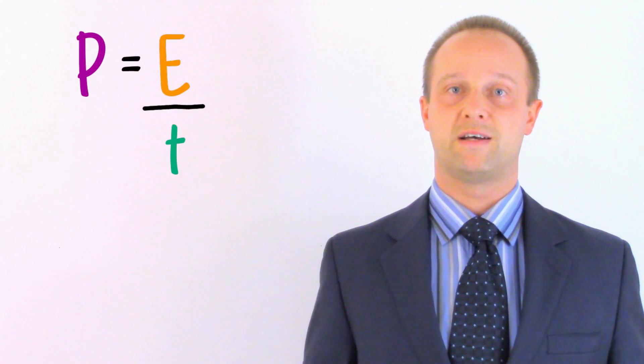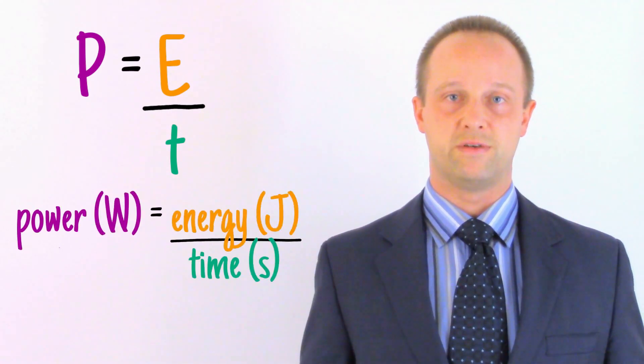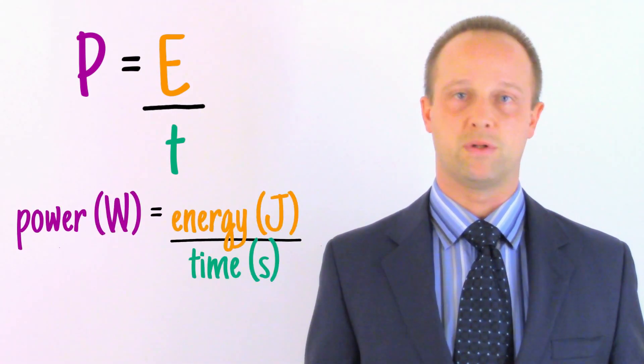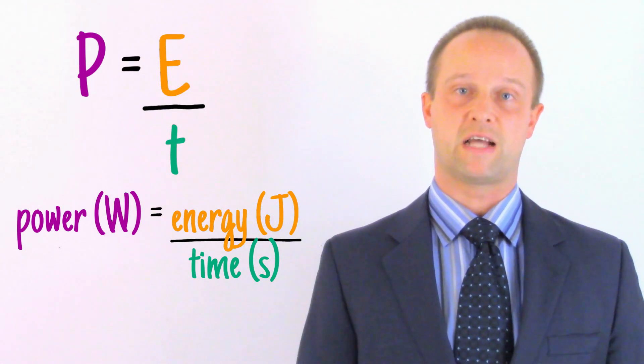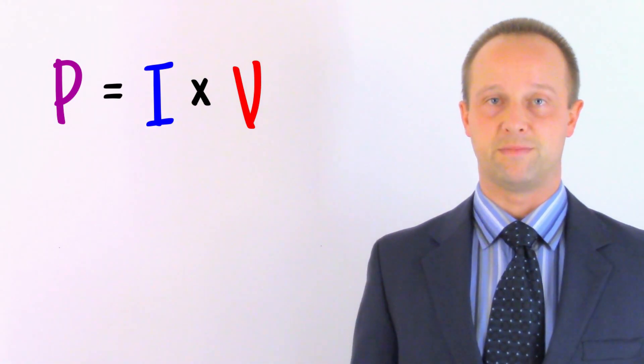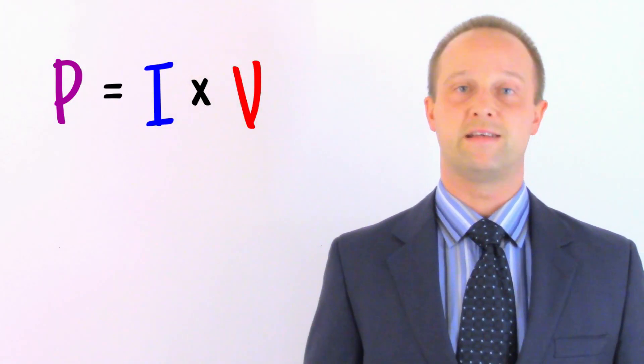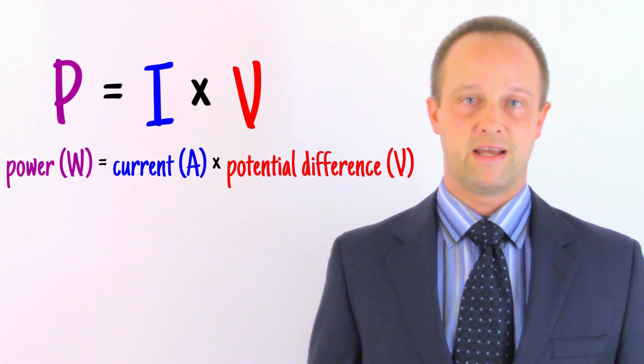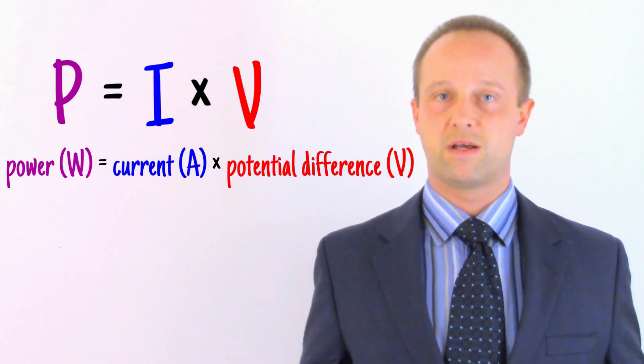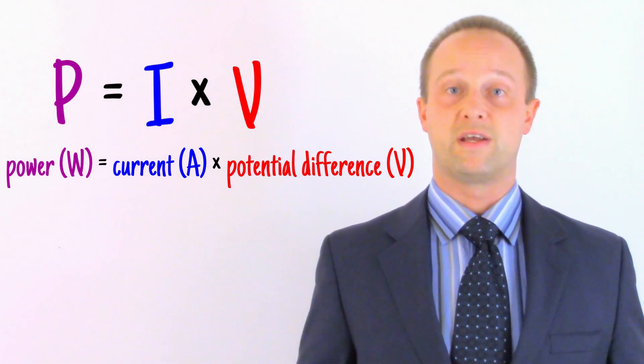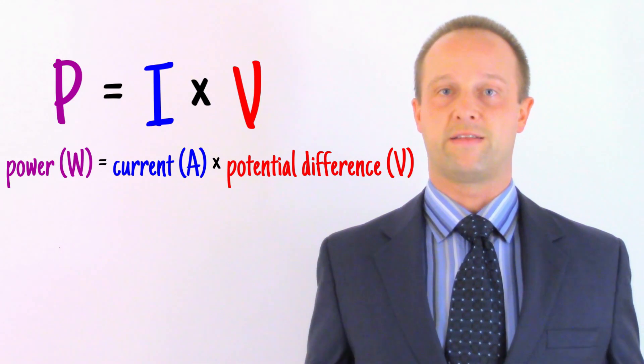So let's move on and consider power. Power is a measure of how much energy an object uses per second. So for example, a 100 watt light bulb uses 100 joules of energy every single second. There's an easy way to work out the power in electrical circuits. We use the equation P equals I times V, or P equals IV. That is the power P in watts equals the current in amps multiplied by the potential difference in volts. Again, we could rearrange this equation. So given any two of these values, we can calculate the third one.